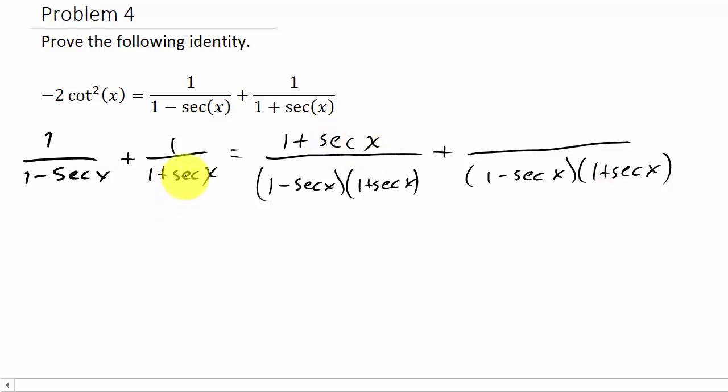Same thing here, what I multiply to this to get my common denominator, well that'd be one minus secant x. So one minus secant x times the numerator is one minus secant x. And this is going to be one plus secant x plus one minus secant x over, and I'm going to go ahead and multiply these out.